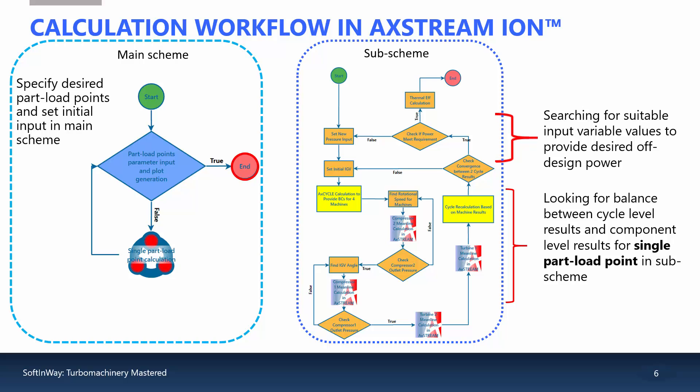The first part of the workflow, at the top, is used to search for suitable input values to reach desired output power. If the power calculated from the previous iterations doesn't meet the requirement, then a new Compressor 1 exit pressure is assigned.